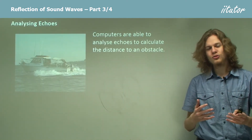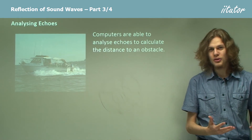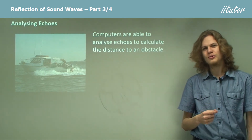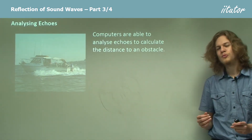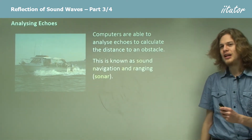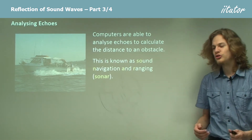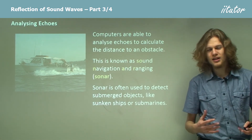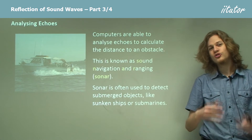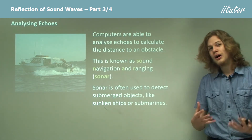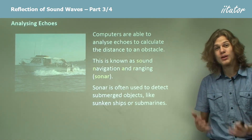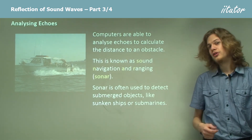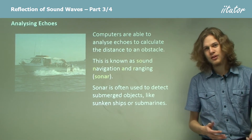We can use echoes to figure out information about our environment, and the best way to do this is with a computer, because it can be very difficult to analyze those echoes with our own ears. This is given a special name when we use sound waves or echoes to navigate — we call it Sound Navigation and Ranging, which is normally shortened to sonar. Sonar is often used to detect submerged objects underwater. Boats send out sonar pulses down to the seabed, and by listening to the echoes they can tell how deep the water is and detect submarines or sunken ships.